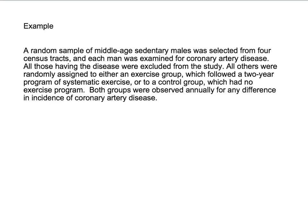In this example, we have a random sample of middle-aged sedentary males selected from four census tracts. Each man was examined for coronary artery disease, and all those having the disease were excluded. All others were randomly assigned to either an exercise group following a two-year program of systematic exercise, or to a control group with no exercise program. Both groups were observed annually for any difference in incidence of coronary artery disease. First, what kind of study is this? We notice the word 'random' is used many times, so let's have our antenna up for a randomized trial.